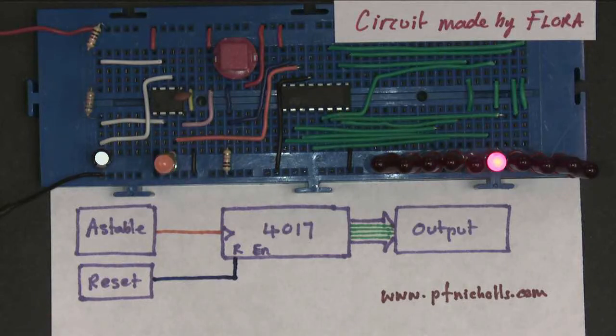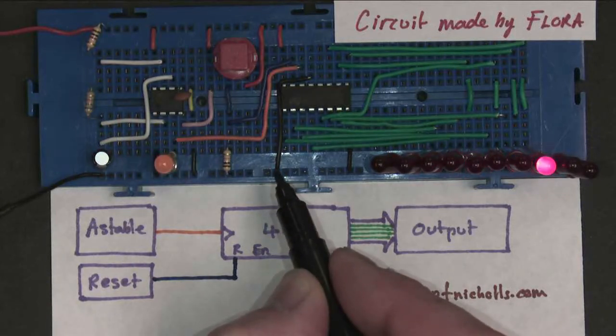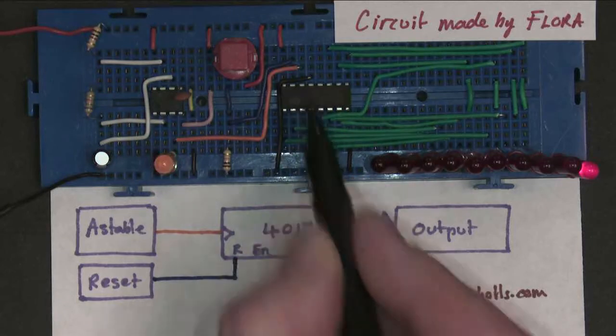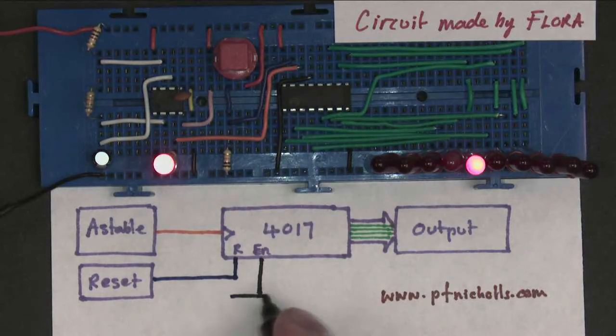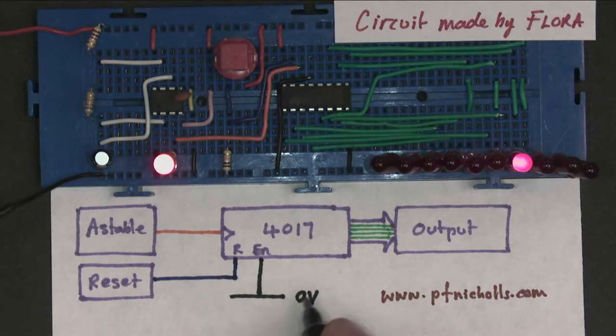And that's this black wire here, which is not the power supply, it actually goes up here, and that's called the chip enable. And that allows the chip to actually do what it's doing at the moment, which is counting the clock pulses.